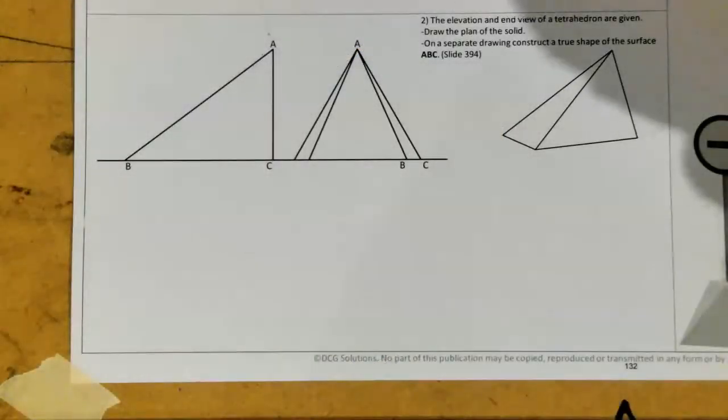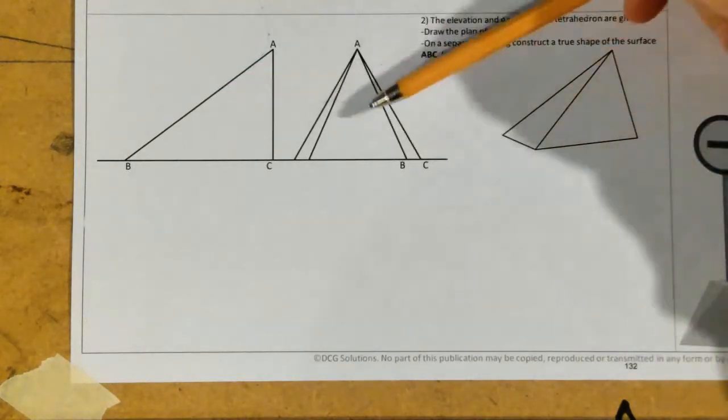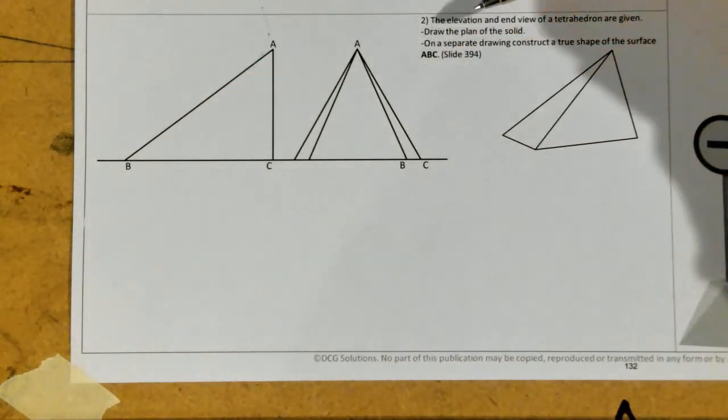Alright folks, so what we actually have to do today is question 2 whereby it says the elevation and view of a tetrahedron are given, so we've got the 3D graphic here, we've got the elevation here, the end elevation here, and it says we have to draw the plan of the solid.